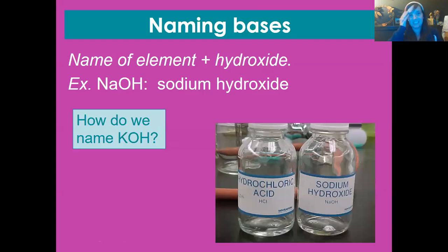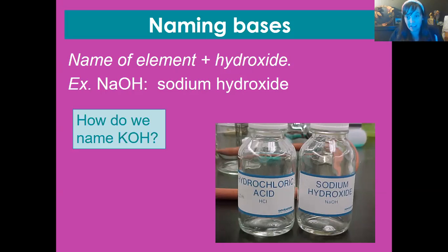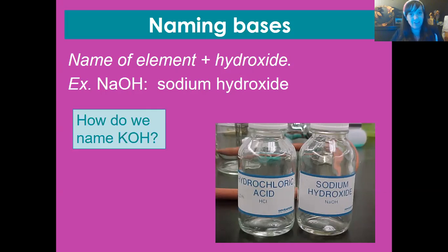Naming bases is also very simple — no different from naming a regular ionic compound. You say the name of the first element and then say 'hydroxide' for the OH. So NaOH is sodium hydroxide. KOH: the first element is potassium, then hydroxide — potassium hydroxide.